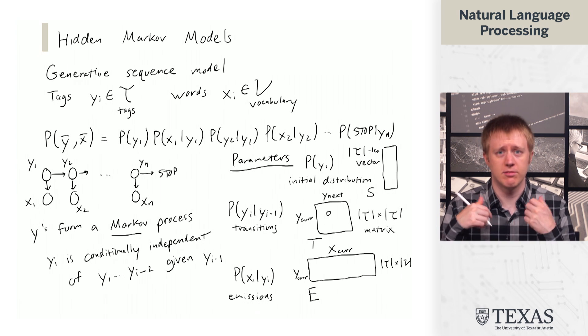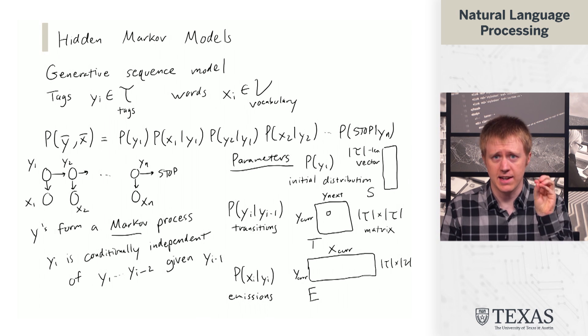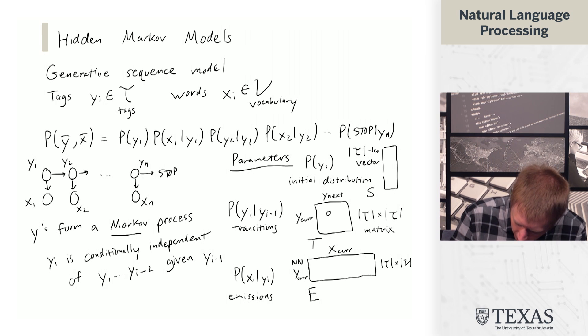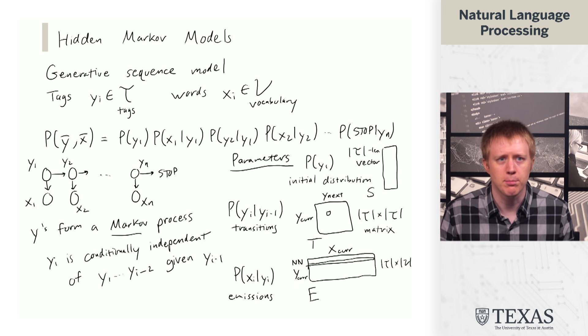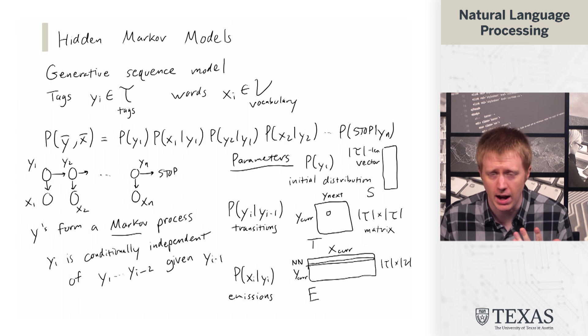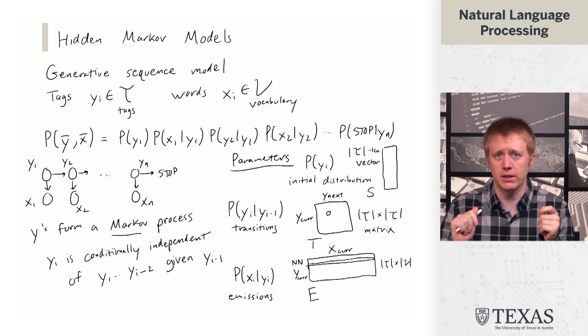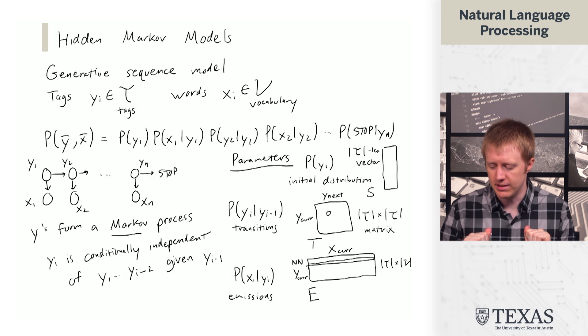And again, it's just encoding the probability of given tag, say, NN. You know, I'll draw kind of a slice here. It says, okay, given tag NN, what is the probability of seeing each word in the vocabulary? And so we do make an assumption that there is a fixed vocabulary here. We're placing a distribution over words in that vocabulary. And so given tag NN, we need each word to have some probability, and those probabilities need to sum to one.